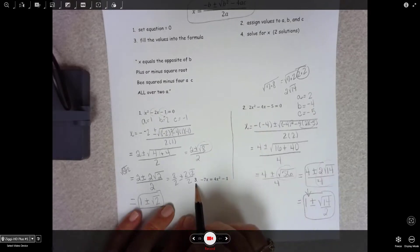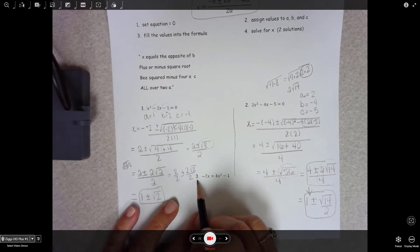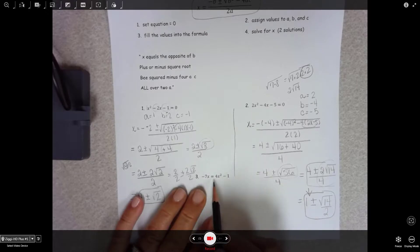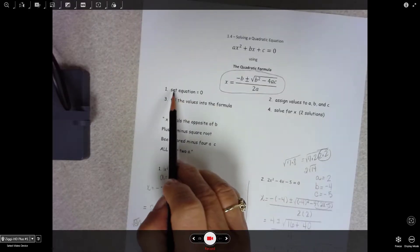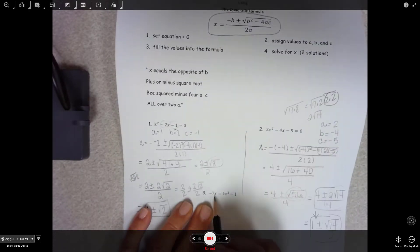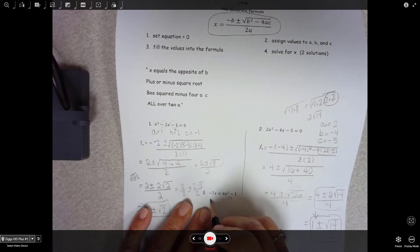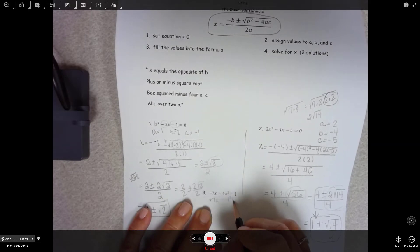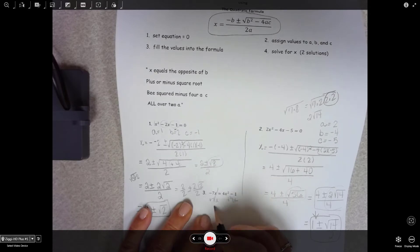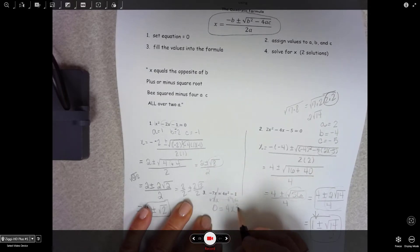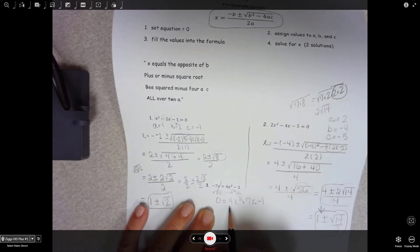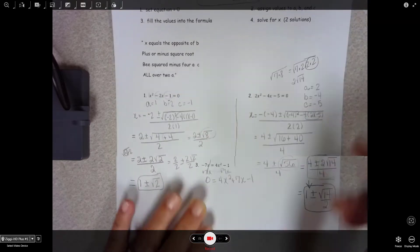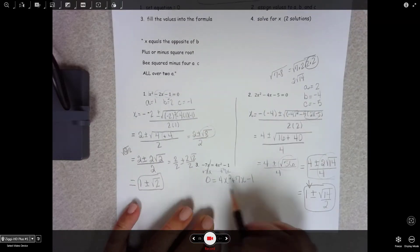I would love for you to do this one on your own and bring it to class, but if you notice, it is not set equal to 0. So you'll need to do that. Use addition property and add 7x so you'll have 0 on one side of the equal sign. 1, 4x squared plus 7x minus 1. Now you've got a quadratic equation that's set equal to 0.